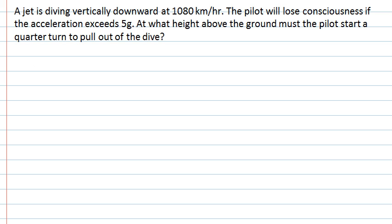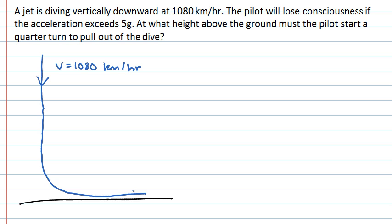Let's start approaching this problem by drawing a diagram. So initially, the jet is moving downwards with a velocity of 1080 km per hour. And at some point before it hits the ground, the jet will have to execute a quarter turn so that it is no longer heading straight for the ground.